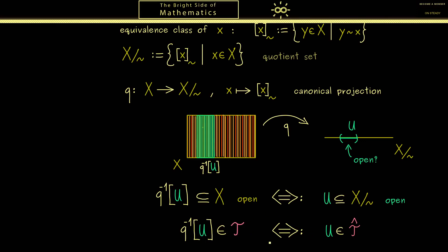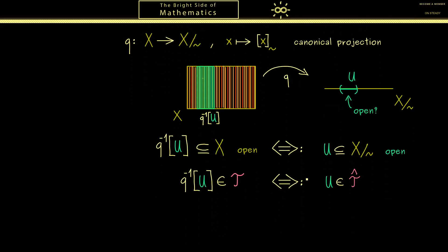Indeed what we have to do is to check that all the properties of a topology are fulfilled here. However it's not hard to verify the three properties. This is simply because the pre-image operator acts very nicely with intersections and unions. Hence the result is in a natural way we get a topology on our quotient set. And it's simply called the quotient topology.